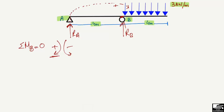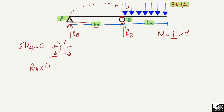The moment equals force multiplied by moment arm. The force is RA and the moment arm is the distance from RA to point B, which is 4 meters. There is also the 3 kN per meter uniformly distributed load producing a moment about B. We convert this UDL into an equivalent point load, which acts at the centroid of the distributed load.